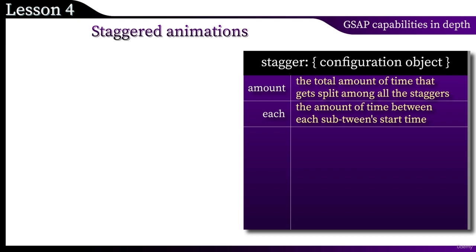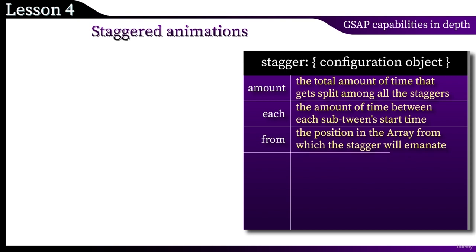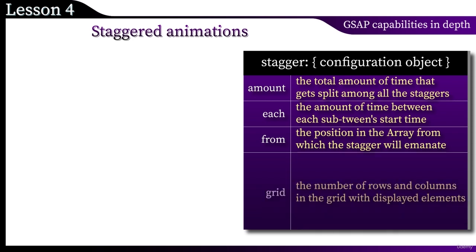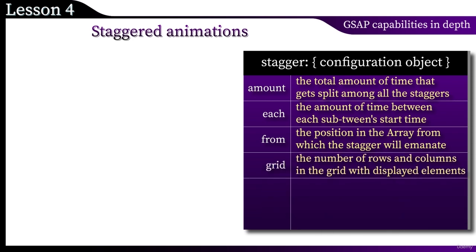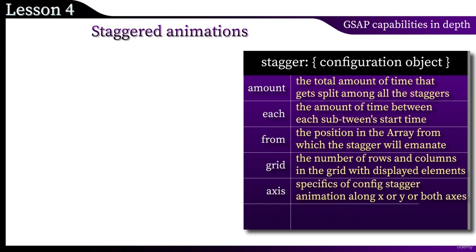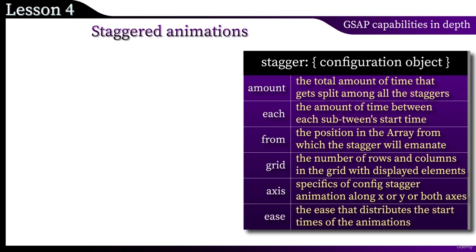For a complete understanding, you need to apply these properties to one animation, and then you will immediately see the difference. But first, let's go over all the properties. From — the position in the array from which the stagger will emanate. Using the grid property, it is possible to specify the number of rows and columns. The axis property allows you to configure animation along the X and/or Y axis. Finally, ease — that distributes the start time of the animations.